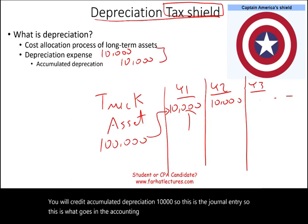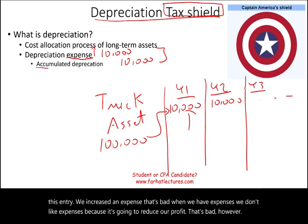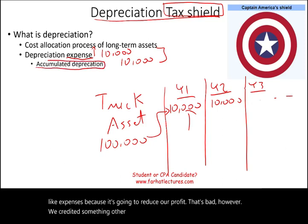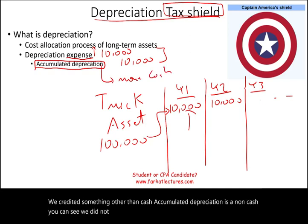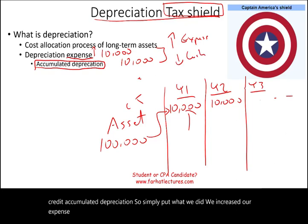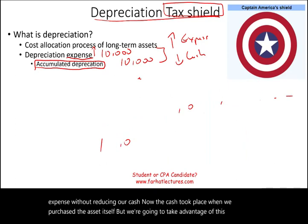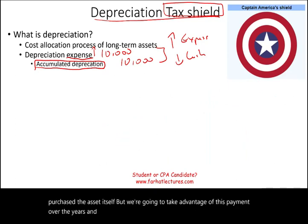Let's examine this entry. We increased an expense, which reduces our profit — that's bad. However, we credited something other than cash. Accumulated depreciation is a non-cash item. We debited expense and credited accumulated depreciation — not cash. Simply put, we increased our expense without reducing our cash. The cash outflow took place when we purchased the asset itself, but we take advantage of that payment over the years and expense it against our income.